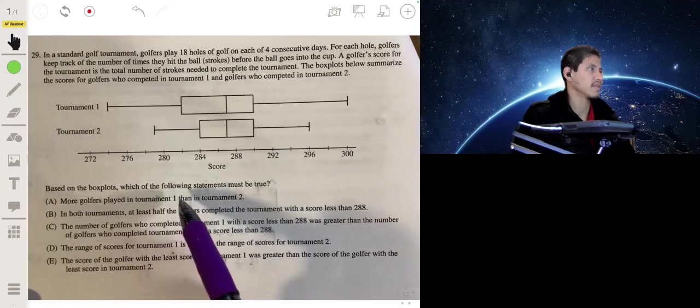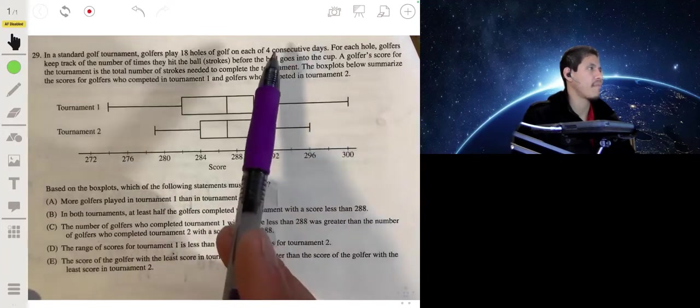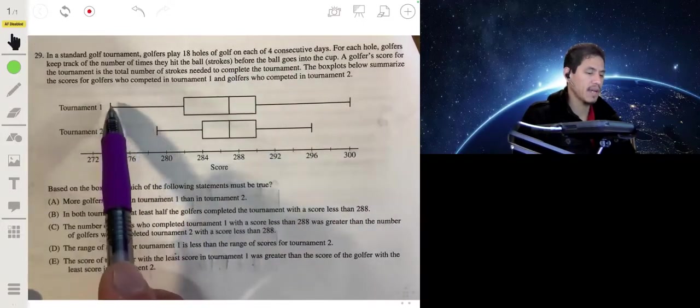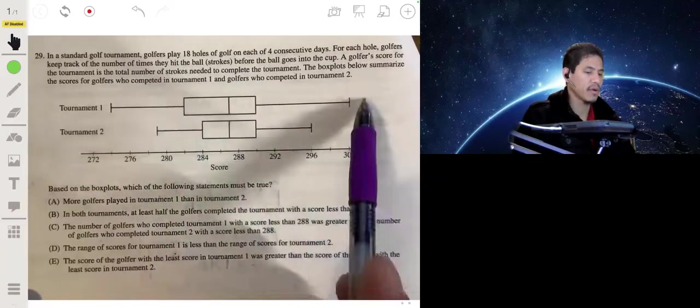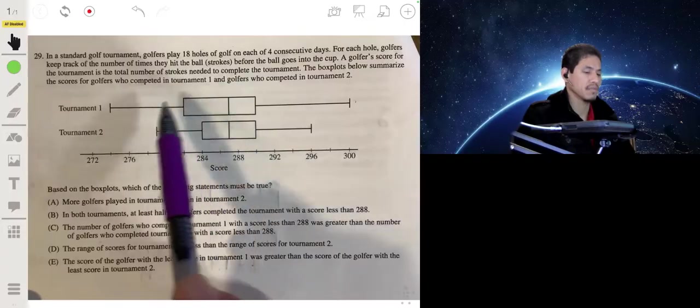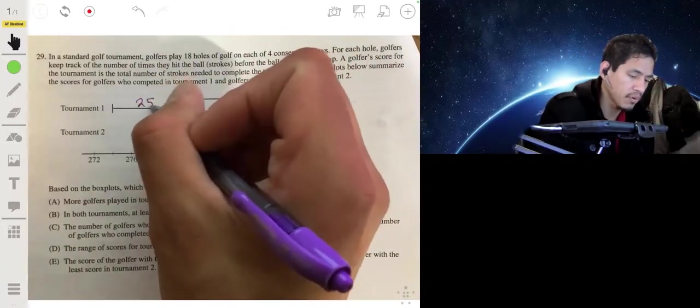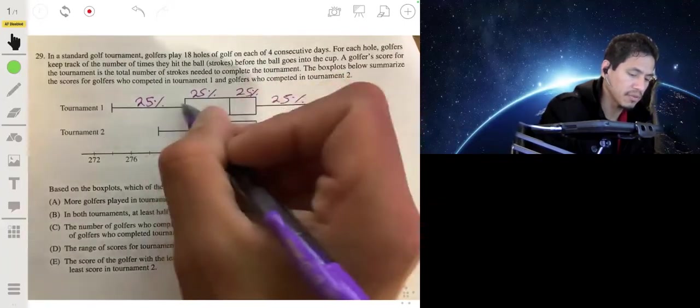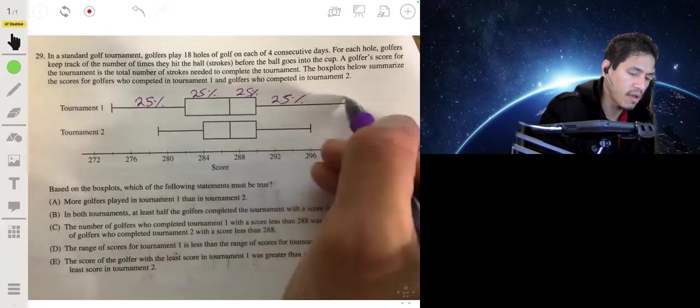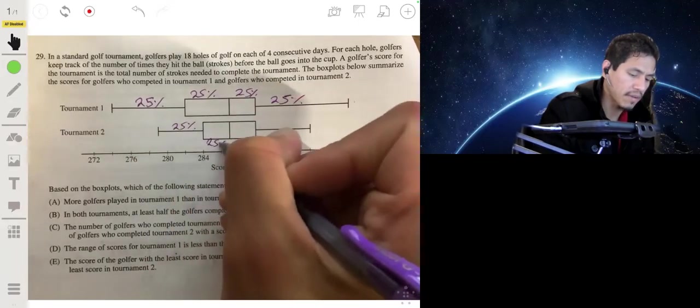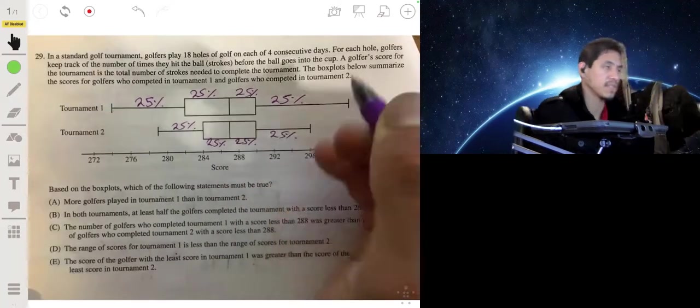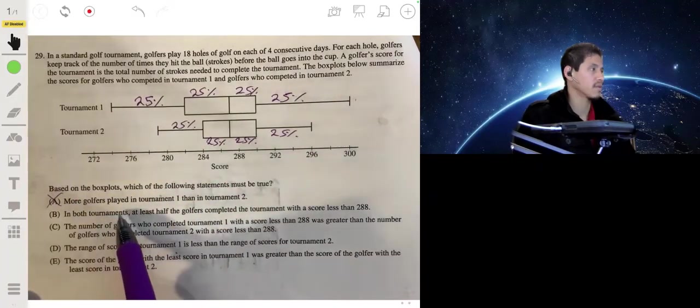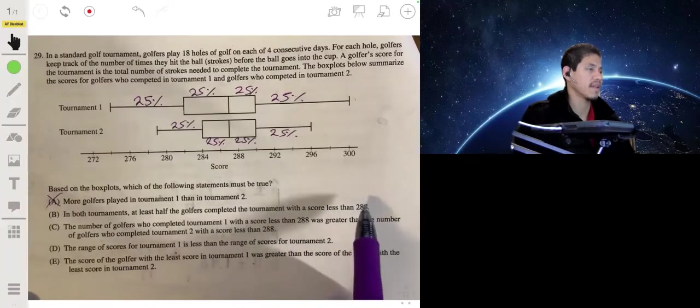It doesn't tell you how many were in each tournament and let's not make the mistake of thinking that the bigger box plot means that there are more people. Remember a box plot tells you what proportion or what percent of the values lie between what intervals. So remember this is 25%, first quartile, second quartile, third, fourth. So it only tells you proportions or percents of the total. So we don't know this for sure. In both tournaments, at least half the golfers completed the tournament with a score less than 288. So remember half, the halfway point in a box plot is basically the median value. So the median value will be here. So is that less than 288?